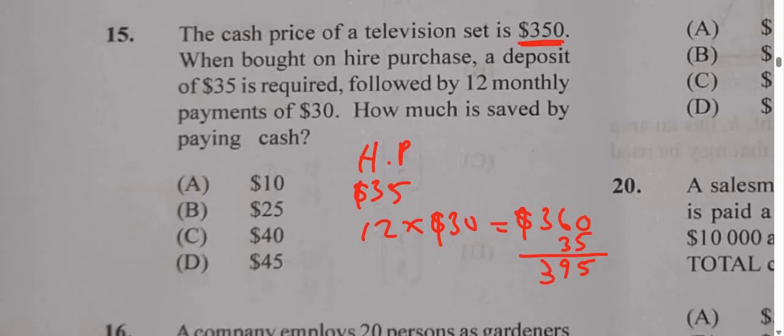Now if you want to find out how much is saved by cash, you'll have to look at the hire purchase price and the cash price, right? The cash price is $350. So if you want to look at how much you'll save, you'll subtract them and it'll be $45.